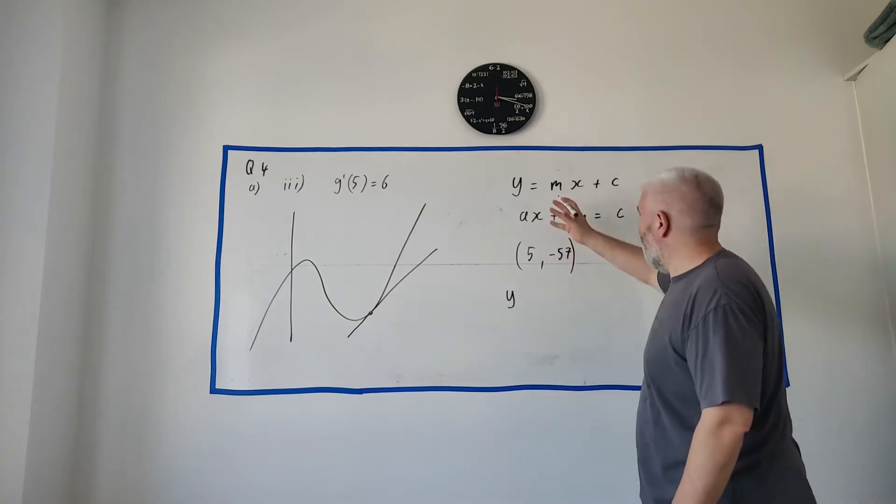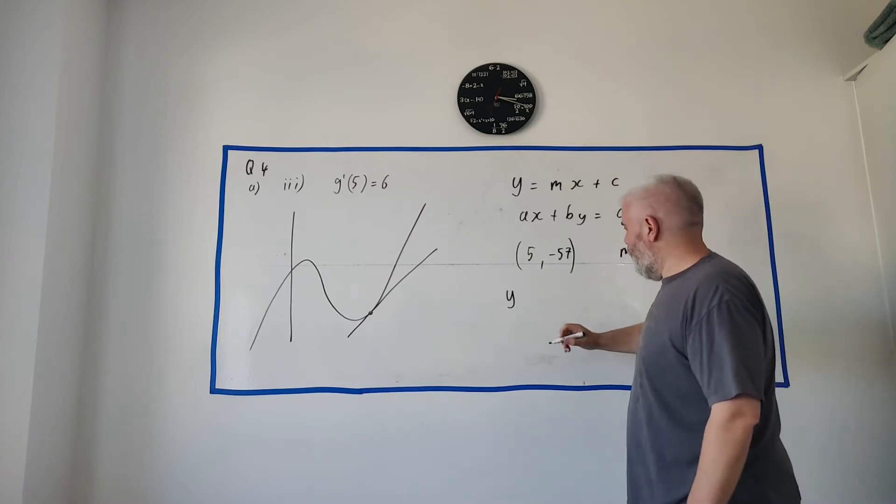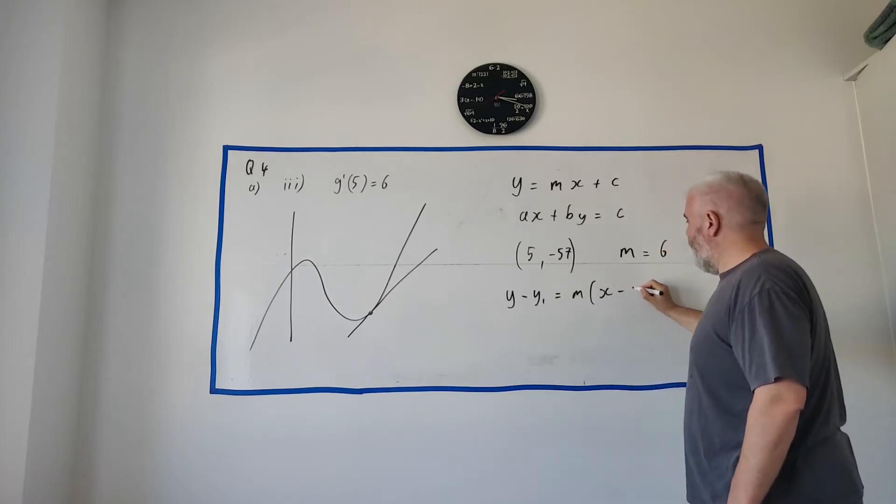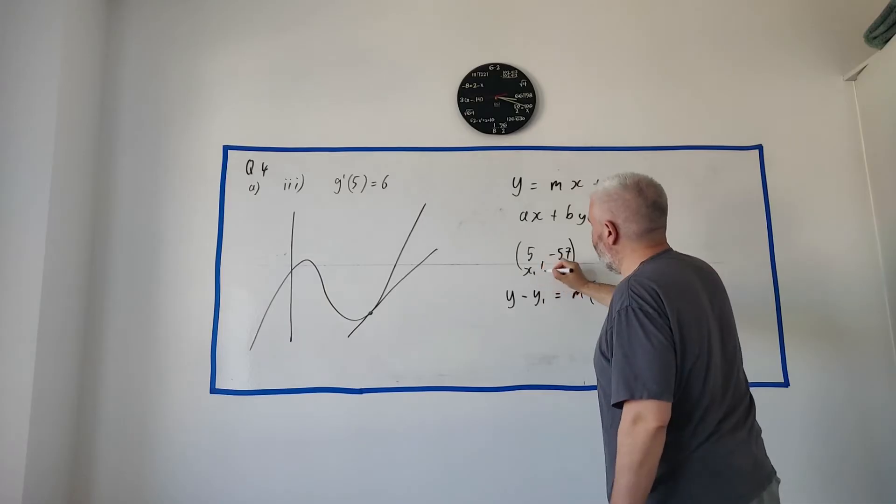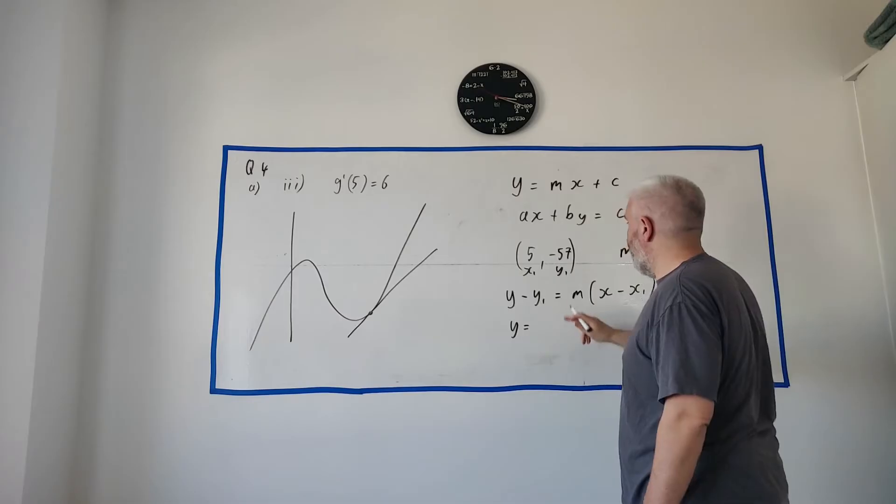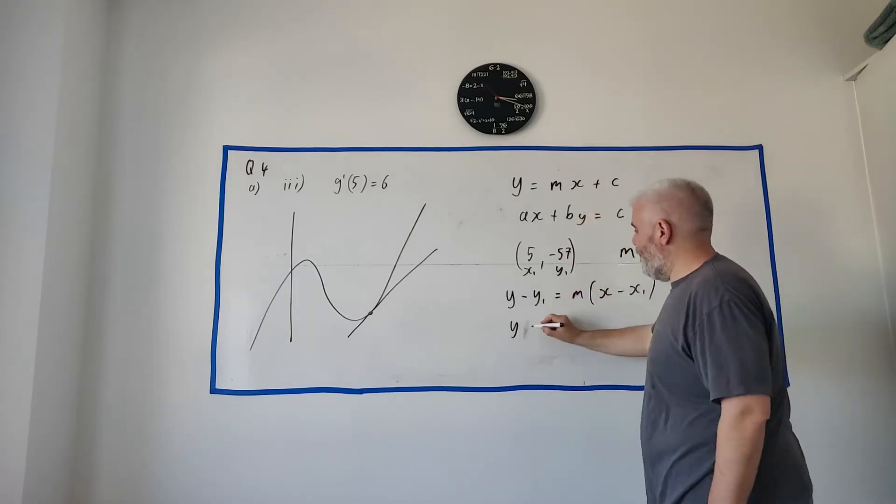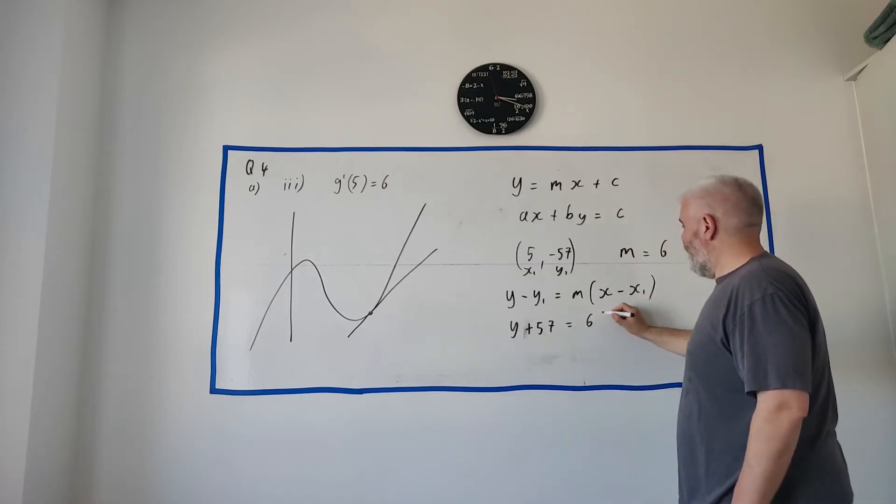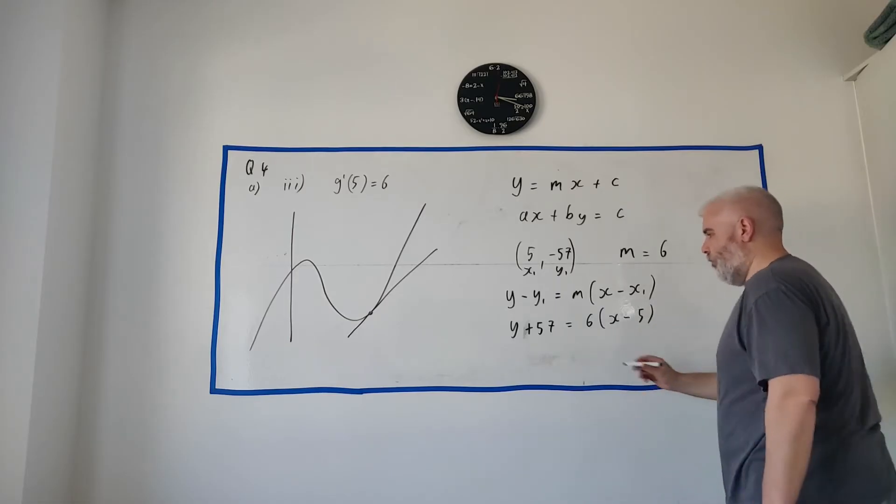Use the formula. There's a couple of ways. You can use this formula here. Some people are good at that. I'll use the more common one. y minus y1 is equal to m multiplied by x minus x1. This is x1. This is y1. And that's m. Put all this in. y minus minus 57 is plus 57 equals 6 multiplied by x minus 5. We can clean this up here.